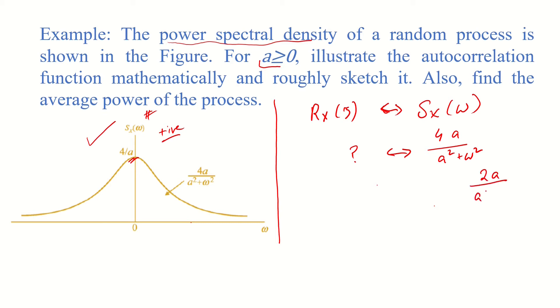We know that 2a over a squared plus omega squared, as per the Fourier transform table, is simply e raised to the power minus a absolute value of tau. From linearity, we multiply by 2 on both sides to make it consistent. This yields the autocorrelation function Rx(τ) which is equivalent to 2e raised to the power minus a absolute value of tau.